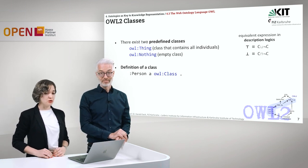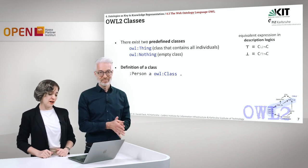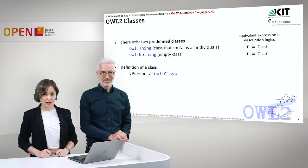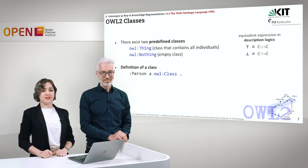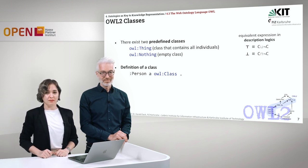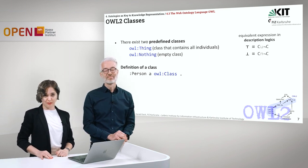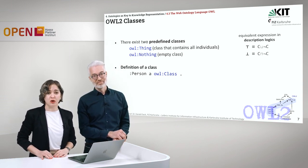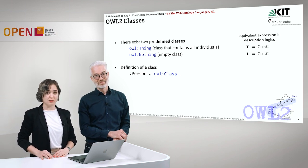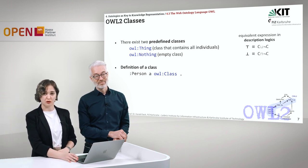There exist two predefined classes in OWL2, as in description logics, equivalent to the bottom and top elements. OWL:Thing is the equivalent of the top element — it's a class that contains all individuals. OWL:Nothing is the equivalent of the bottom element, which is the empty class. From this slide onward, you can see the equivalencies for OWL classes and properties in grey, and we will not go into the details of description logic equivalents.